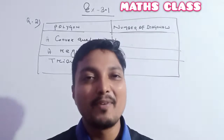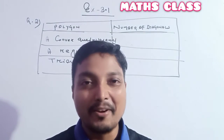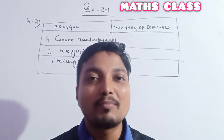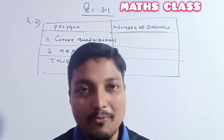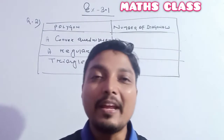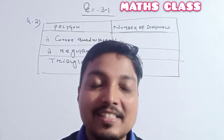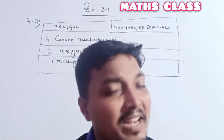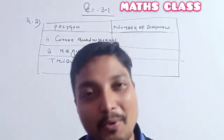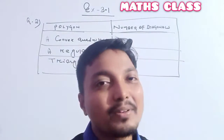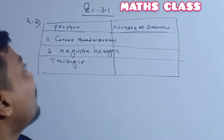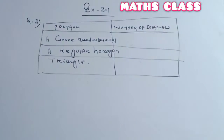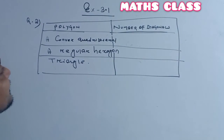Hello and good morning everyone. Welcome to our standard 8, chapter 3 discussion. The name of chapter 3 is 'Understanding Our Quadrilaterals.' Many important points were already discussed, and question number one of exercise 3.1 was already completed. So now we will do question number two of exercise 3.1.